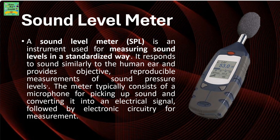A Sound Level Meter (SPL) is an instrument used for measuring sound levels in a standardized way. It responds to sound similarly to how the human ear responds and provides objective, reproducible measurements of sound pressure levels. The meter typically consists of a microphone for picking up the sound and converting it into an electrical signal, followed by electronic circuitry for measurement.